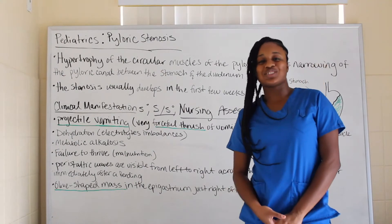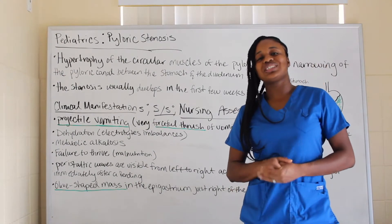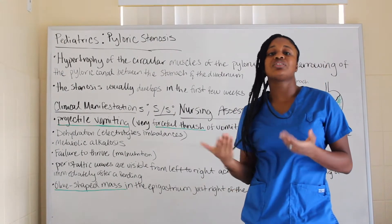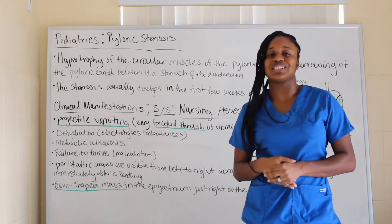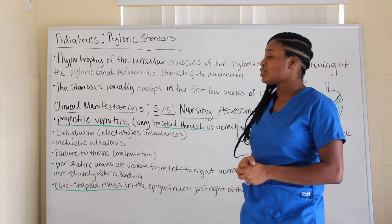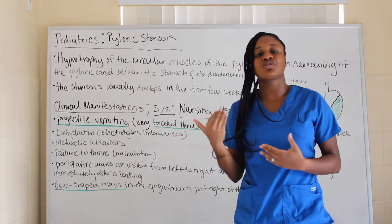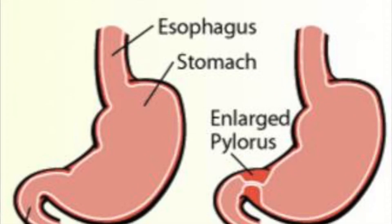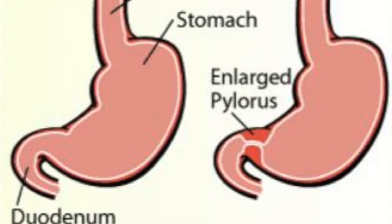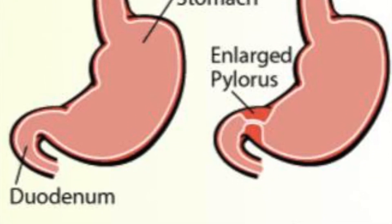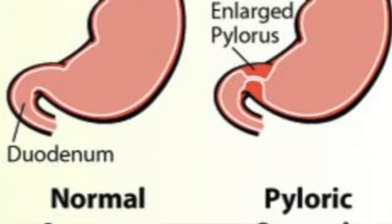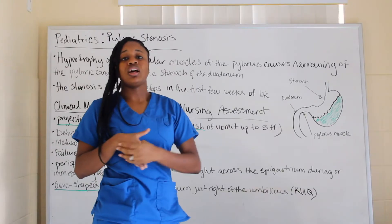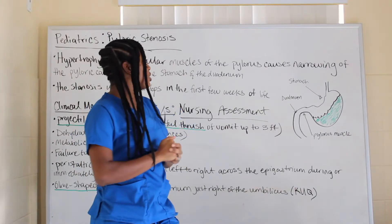Hi everyone, and welcome back to the journey. Today we're going to be talking about pediatrics, in particular pyloric stenosis. Pyloric stenosis is a hypertrophy of the circular muscles of the pylorus, which causes the narrowing of the pyloric canal between the stomach and the duodenum.